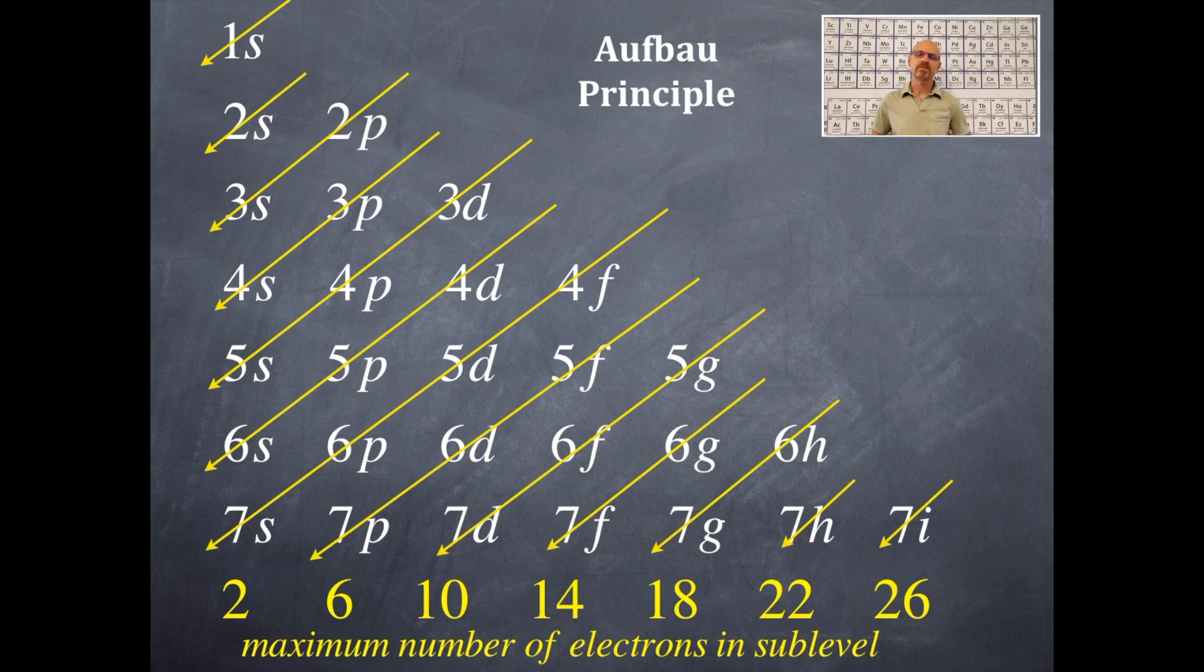This right here shows you the maximum number of electrons in each of the subshells. How many electrons can you fit in the s subshell? 2. How many electrons can you fit in the p subshell? That is 6, because there are 3 orbitals, 2 electrons per orbital. How many electrons can you fit in the d subshell? Well, 10, because there are 5 orbitals, 2 electrons per orbital, so it's 2 times 5. Same pattern for the f subshell: there are 7 orbitals in the f, but 2 electrons per orbital, so 2 times 7 gives me 14.